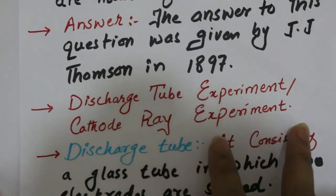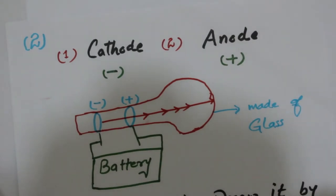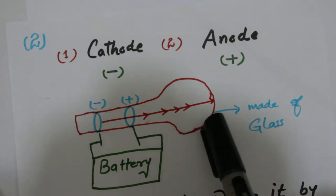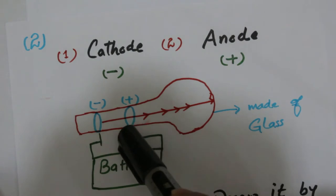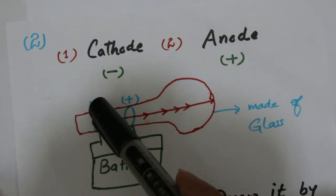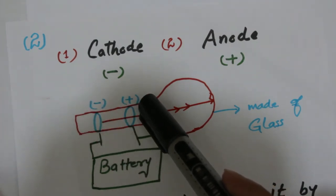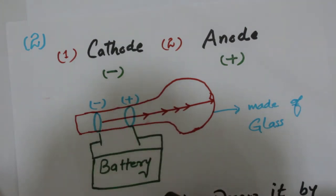Here you can see that the discharge tube is actually made of glass, inside which two electrodes are sealed. One electrode is called the cathode, which is negatively charged, and the other one is called the anode, which is positively charged. These two electrodes are connected with a battery.